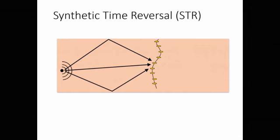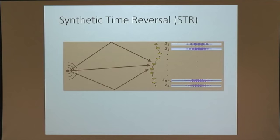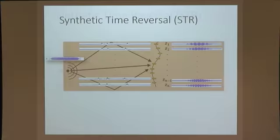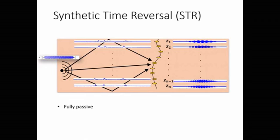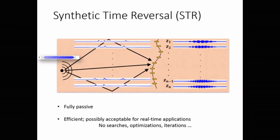In synthetic time reversal, the inputs are the locations of receivers and the received signals. From these, we can recover the source signal and all the impulse responses. Synthetic time reversal is a fully passive technique—we do not need to broadcast, we just listen. And it is very efficient: there are no searches, optimizations, or iterations.